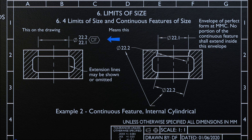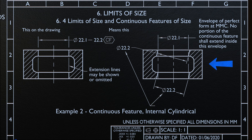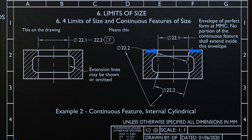Also, the diameter can be shown in this way, or it can also be shown in one line as illustrated on the screen. This feature is interpreted as illustrated on the right side of the screen. To accept this part, each cross-section shall be within the limit of size, which means no portion of the continuous feature shall extend inside this envelope of perfect form at MMC.